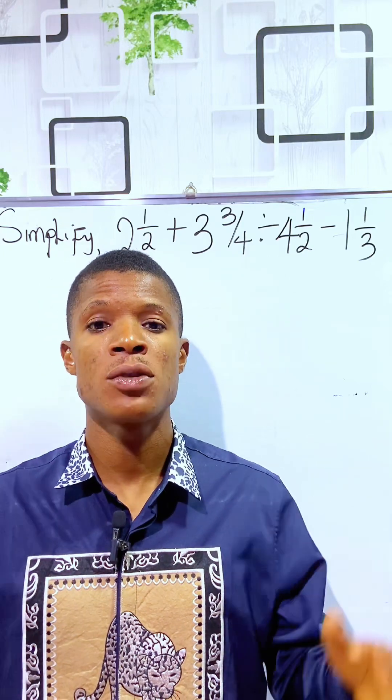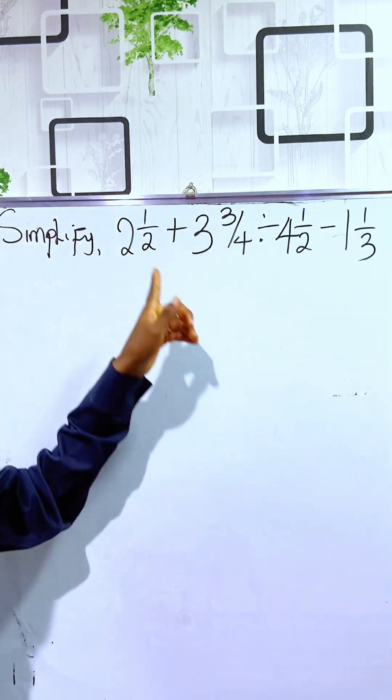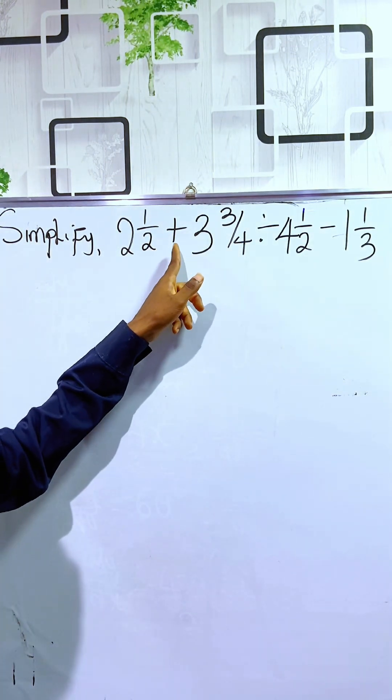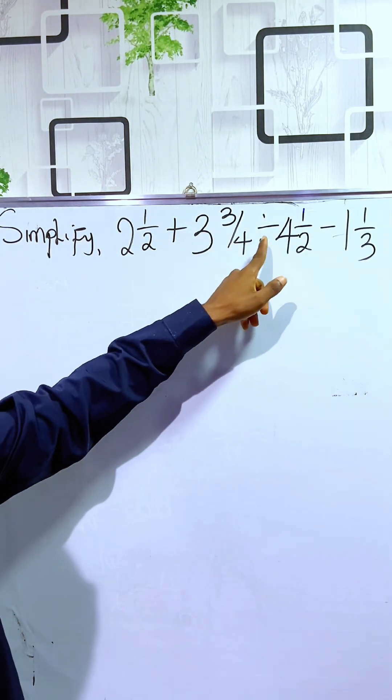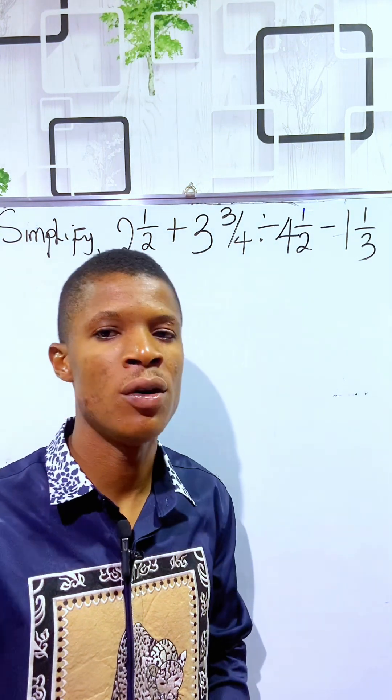In this video, we are going to learn how to simplify fractions. Here, we are given 2 wholes 1 over 2 plus 3 wholes 3 over 4 divided by 4 wholes 1 over 2 minus 1 whole 1 over 3.